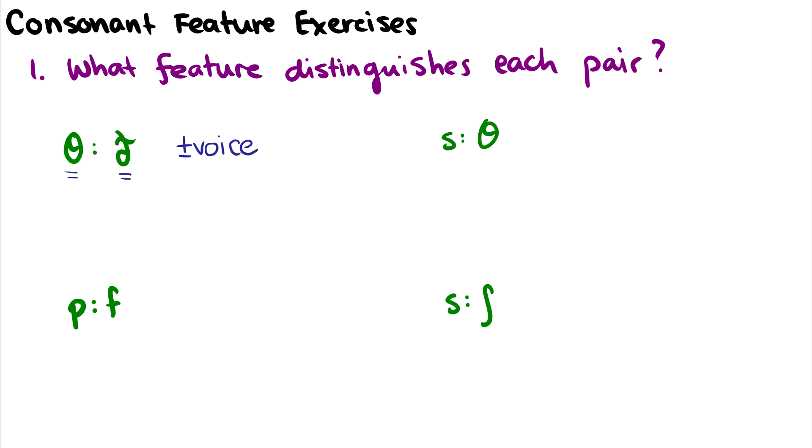What about p and f? Which one feature separates these two sounds? That's going to be plus or minus continuant, which we shorten with plus minus cont. So for instance, p is minus continuant because there's a full closure in the mouth, while f is plus continuant because it has that turbulent airflow.